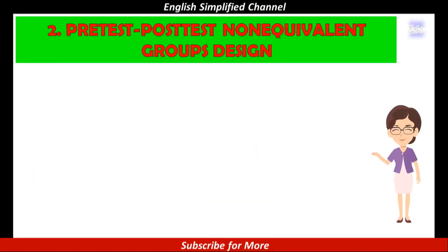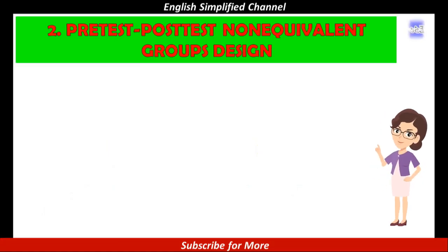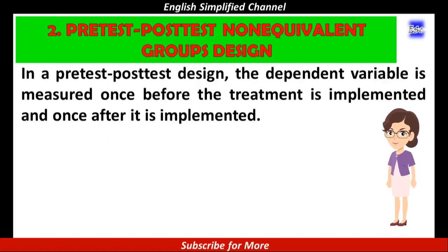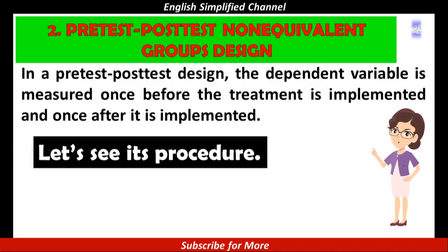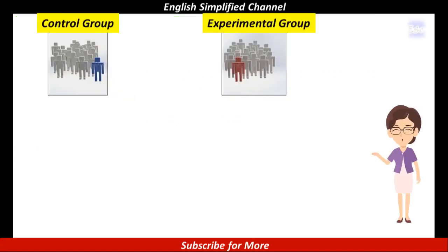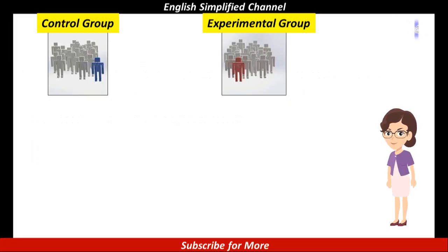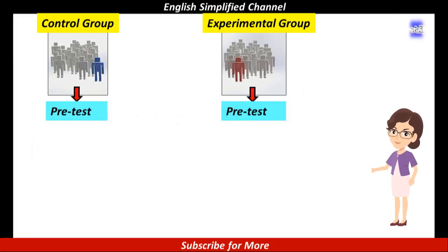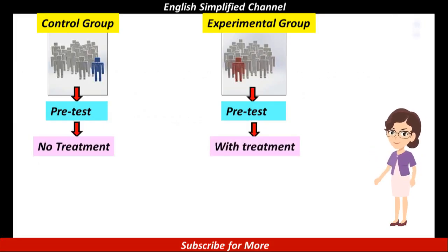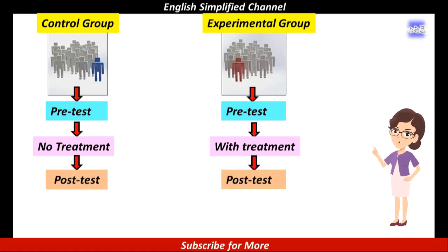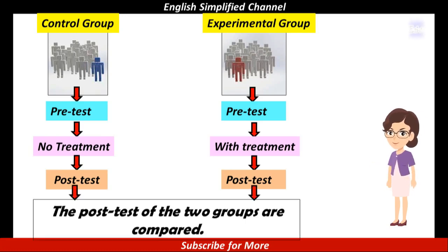Number 2. Pre-test post-test non-equivalent groups design. In a pre-test post-test design, the dependent variable is measured once before the treatment is implemented and once after it is implemented. This design also has two groups of sample — control and experimental groups. The first step is to administer a pre-test to the two groups. Then it is continued by giving the treatment to only the experimental group. Having finished giving the treatment, the two groups are tested once again with what is called post-test. And to make the conclusion, the data is analyzed by comparing the mean of the post-test of the two groups, or by statistical analysis of t-test.